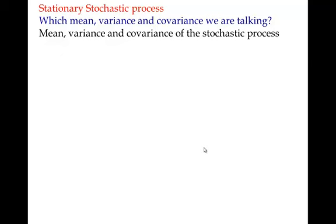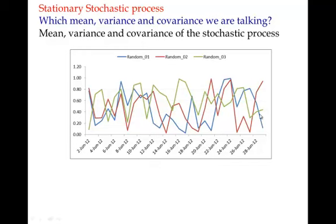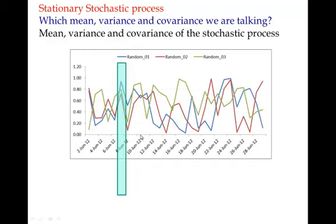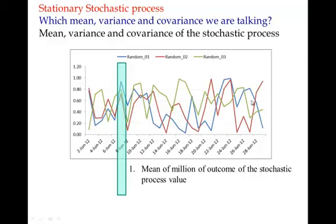When we talk about a stationary stochastic process, the mean, covariance, and variance we are referring to belong to the stochastic process itself. Suppose there is a stochastic process generating random number sequences, and we are talking of millions of such sequences. The mean of these millions of values — whether you take it on 8th June, 10th June, or 12th June — is supposed to be the same. That is the first condition of stationarity.